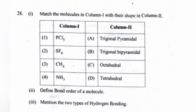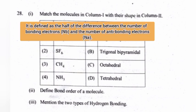Define bond order of a molecule. It is defined as half of the difference between the number of bonding electrons and the number of antibonding electrons.